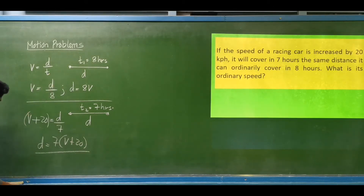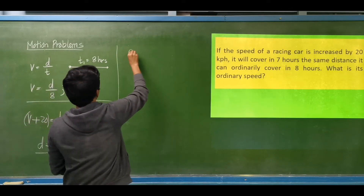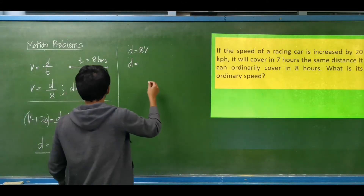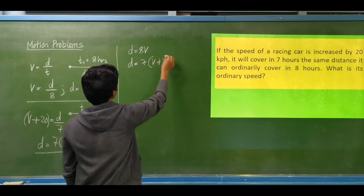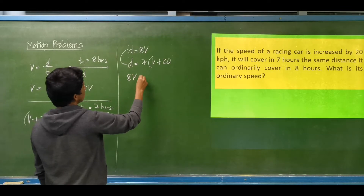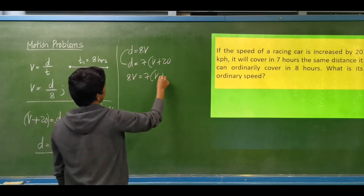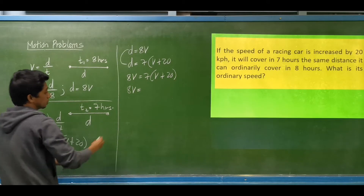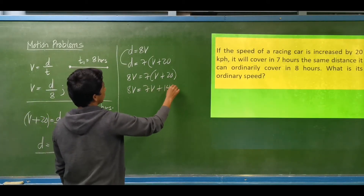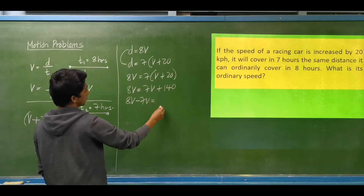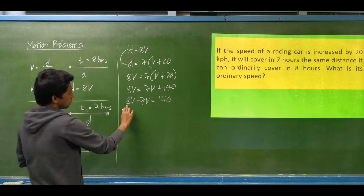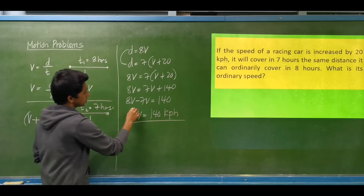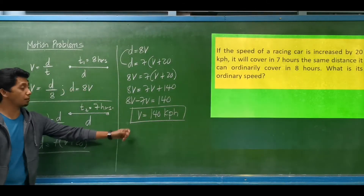We have two equations equal to the distance. So equating them: 8 times the velocity equals 7 times the quantity velocity plus 20. Expanding: 8v = 7v + 140, so v = 140 kilometers per hour. This is the ordinary speed, and that will be our answer.